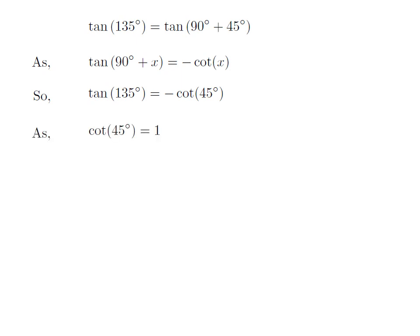We know the value of cotangent of 45 degree is equal to 1. So, tangent of 135 degree is equal to minus 1.